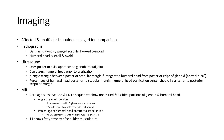The percentage of the humeral head posterior to the scapular margin is assessed, and the humeral head ossification center should lie anterior to the posterior scapular margin. MRI uses cartilage-sensitive sequences: GRE and PD fat-saturated sequences to evaluate unossified and ossified portions of the glenoid and humeral heads.